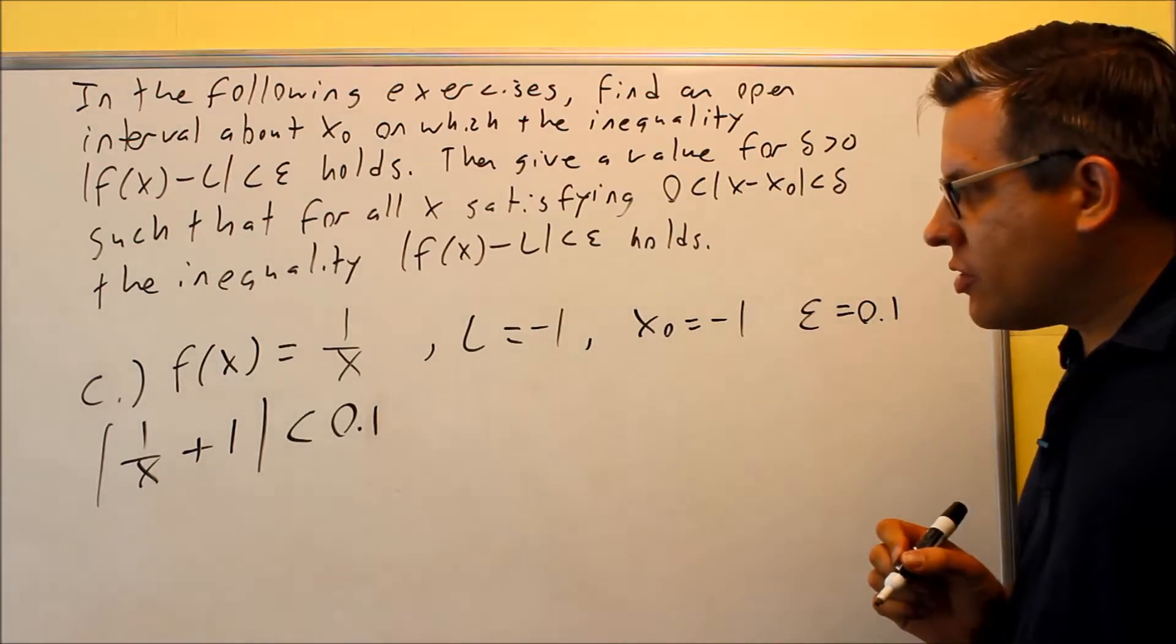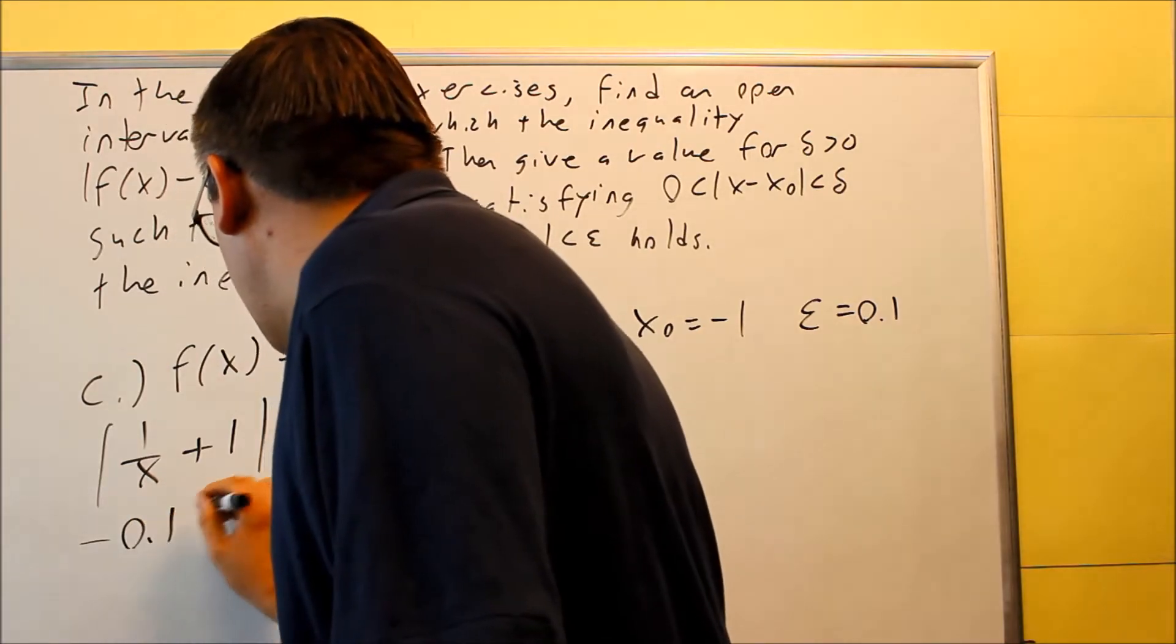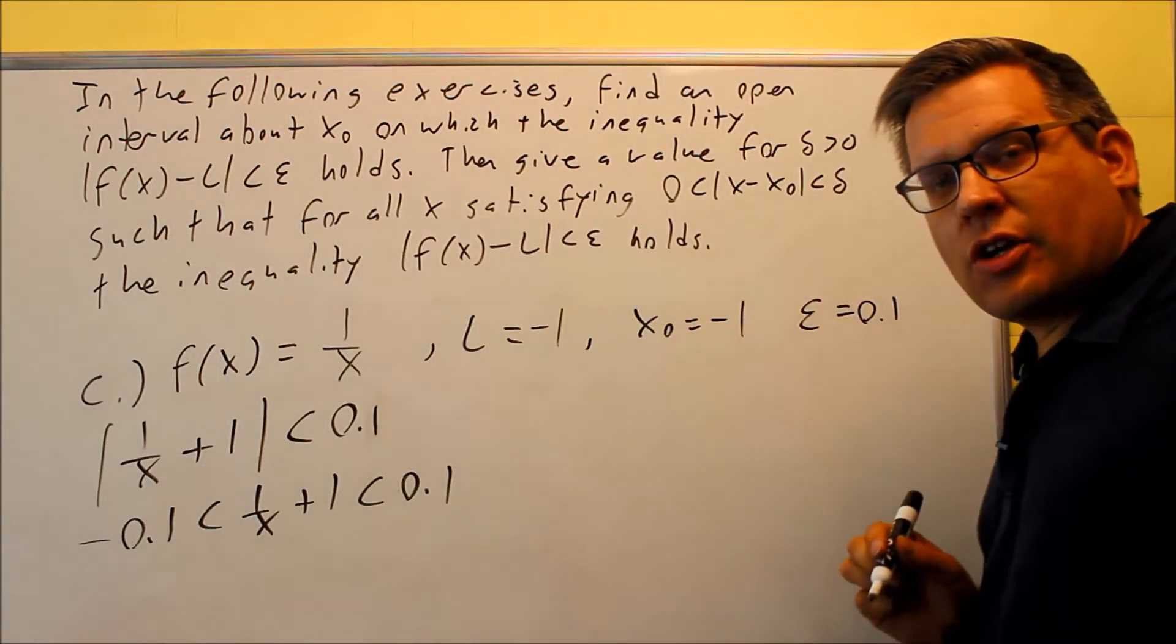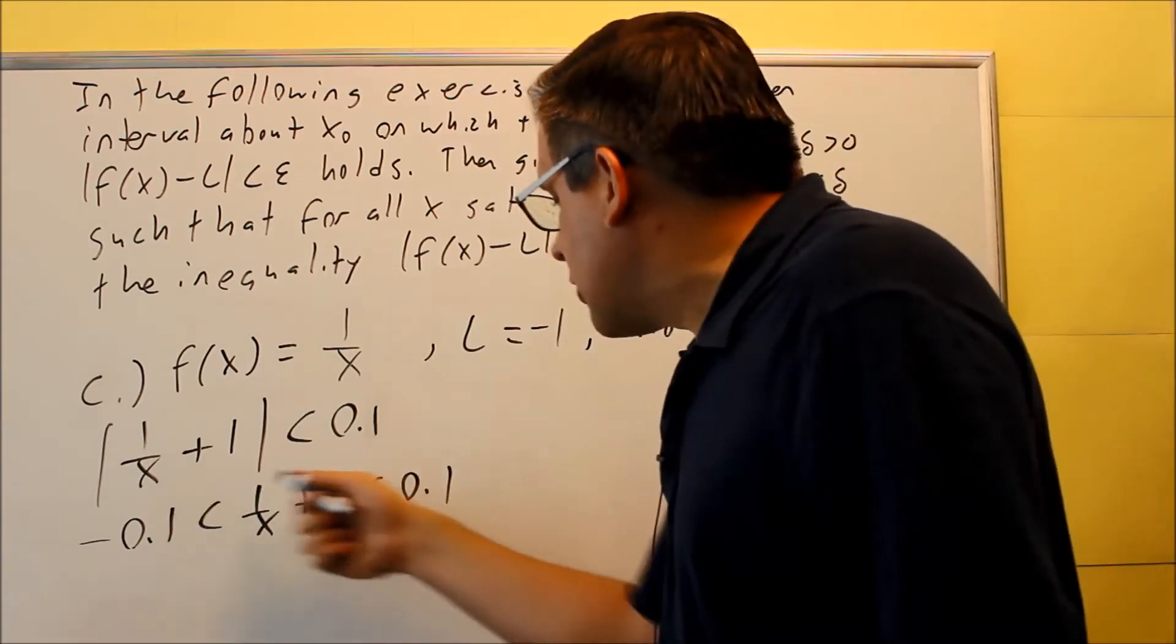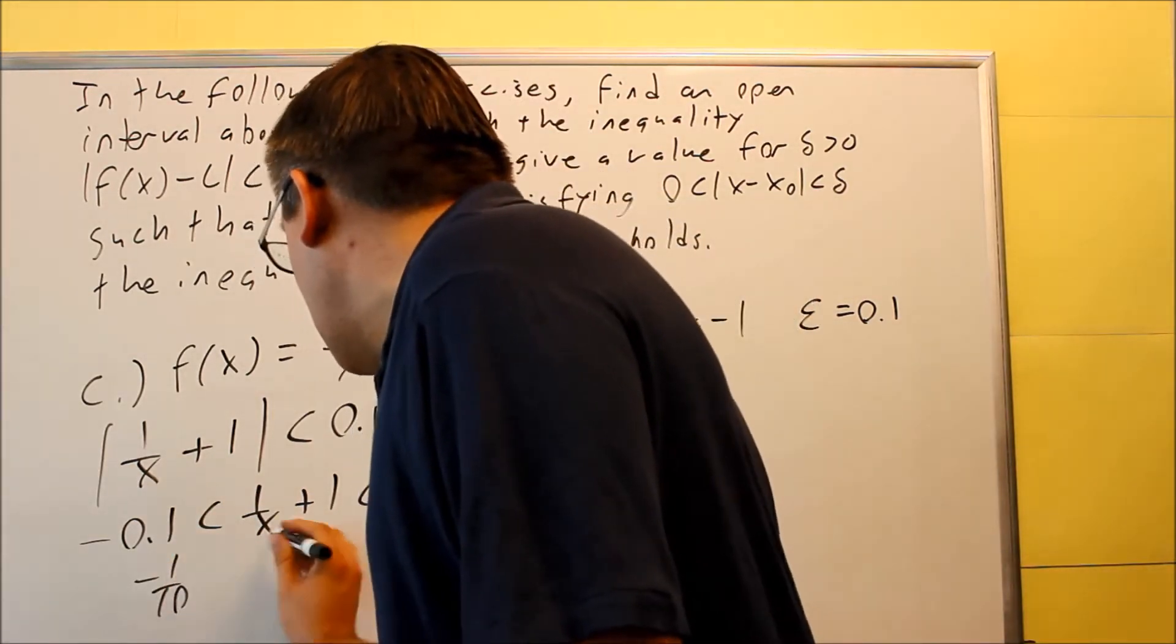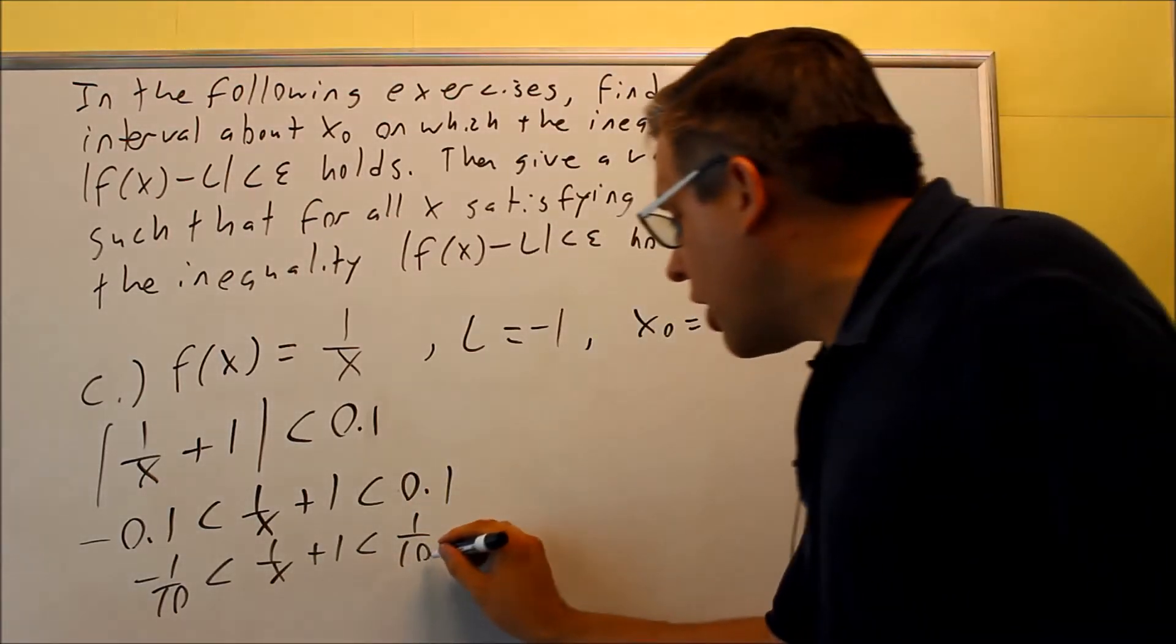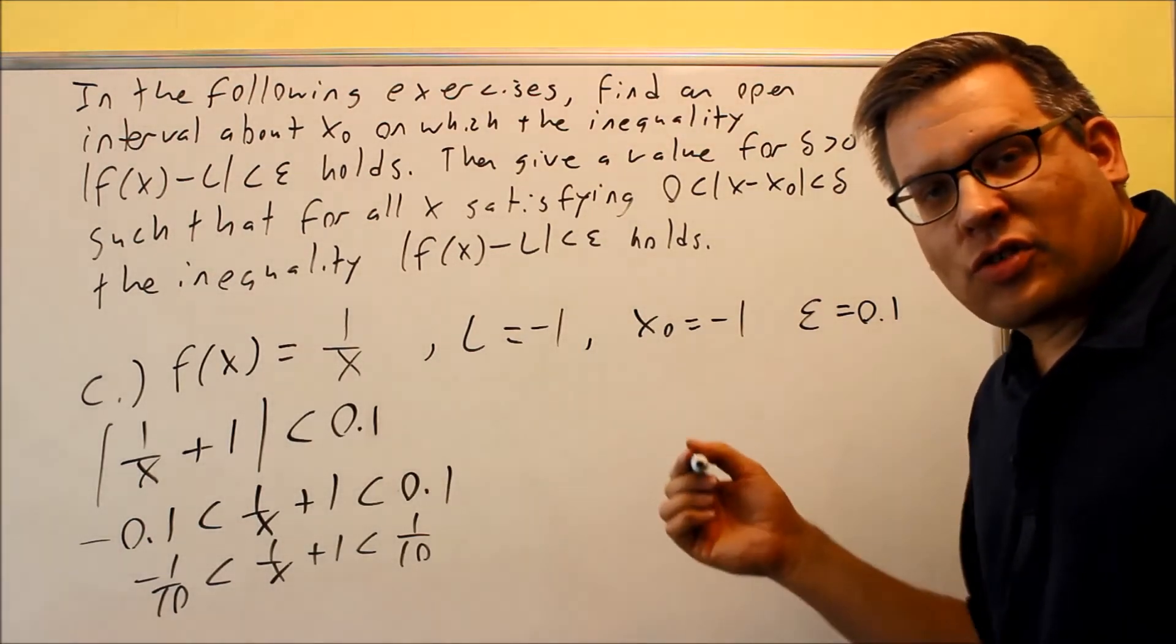Now we're going to change this into an inequality like we did before. So negative 0.1 less than 1 over x plus 1 less than 0.1. And because we're dealing with fractions here, most likely the answer for this problem is going to be a fraction, so I'm going to change these into fractions. That's going to be negative 1/10 less than 1 over x plus 1 less than positive 1/10. That way when I do the rest of the work, all my answers will be in terms of fractions, which is usually what they want for this kind of problem.